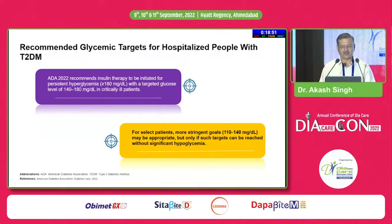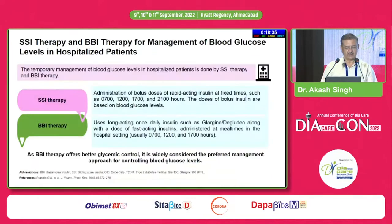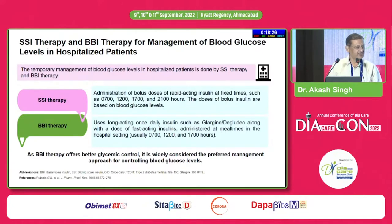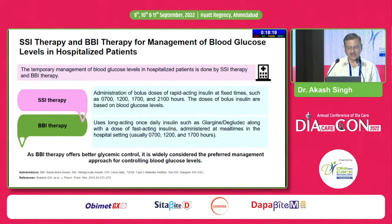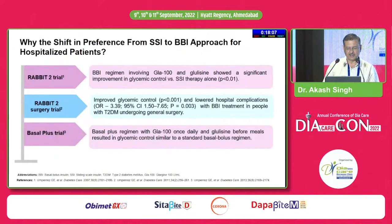ADA recommends that insulin therapy be initiated if sugars remain more than 180. For select patients we can go for stringent targets of 110 to 140; otherwise we should settle for a target of 140 to 180, because hypoglycemia is detrimental. What we should be giving nowadays is basal bolus therapy, which entails administration of a long-acting basal insulin along with prandial and correctional short-acting insulins.